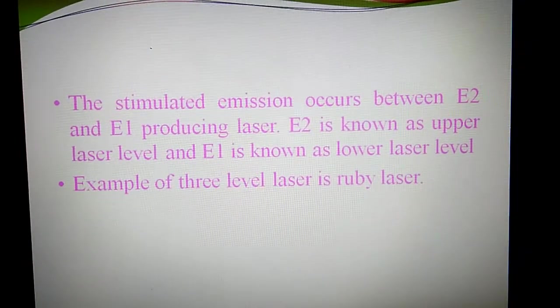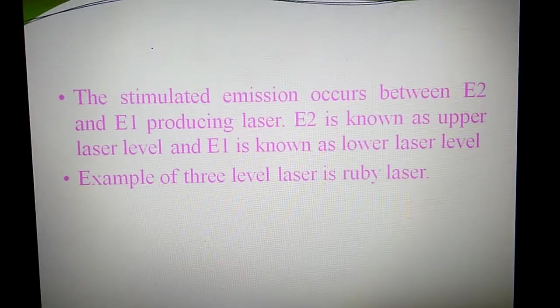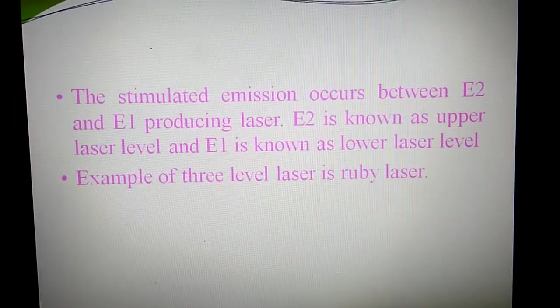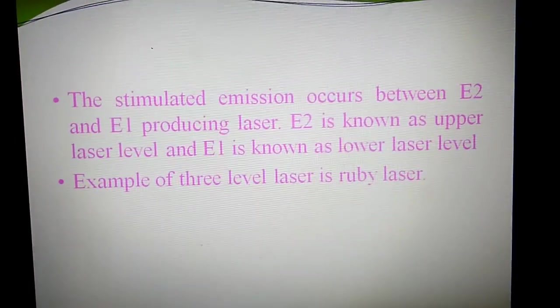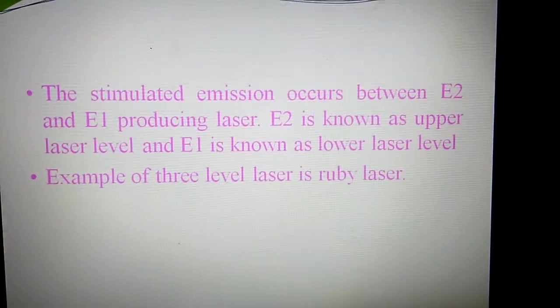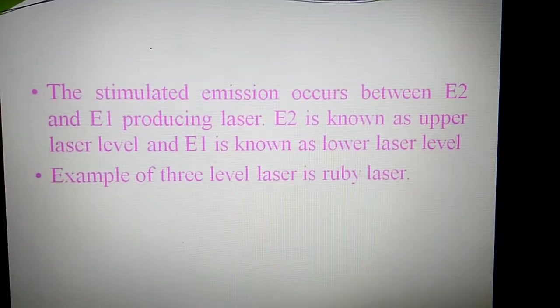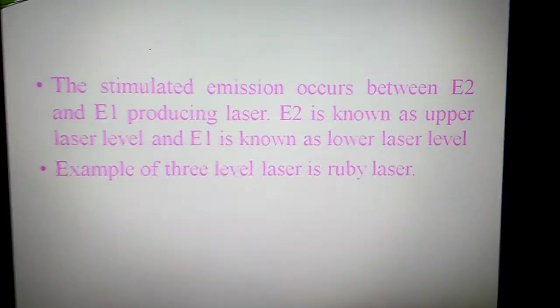The stimulated emission occurs between E2 and E1 producing laser. This laser is produced between E2 and E1, means metastable to ground state. This E2 is known as the upper level laser and E1 is known as lower level laser. The example of this is ruby laser.